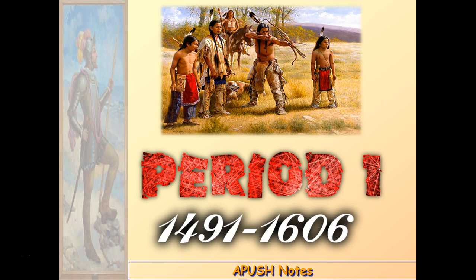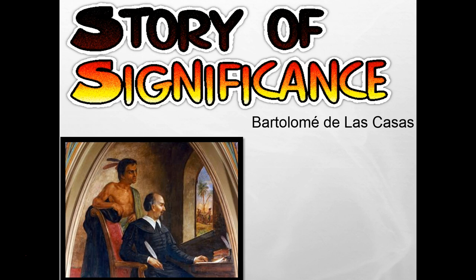Let's begin today with Period 1. According to the College Board, Period 1 is one of the least tested of the time periods, consisting of only approximately 5% of the exam. That doesn't mean we're going to ignore Period 1, but it will be less emphasized. From what I've seen, Period 1 is usually asked in the form of multiple choice questions. Period 1 covers the years 1491 to 1607 — basically pre-Columbus to the settlement of the first English colony in America, which is Jamestown. Each lesson, I highlight a figure in history that stands out, and one that I've seen several questions derived from on the AP exam. I like to call this our story of significance, and for Period 1, our story of significance is Bartolome de la Casas.